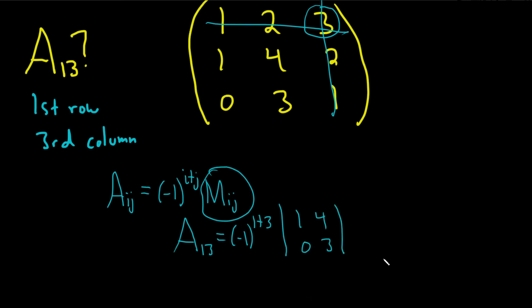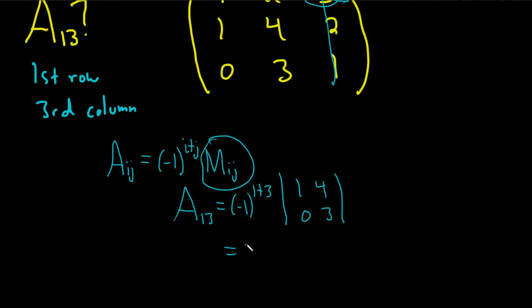Okay, so let's work this out. So this will be negative 1 to the fourth power, because 1 plus 3 is 4. And then here we get 1 times 3, using the formula for determinants, minus 4 times 0.